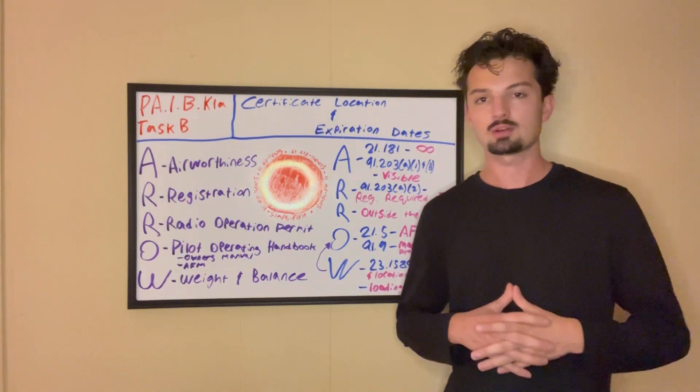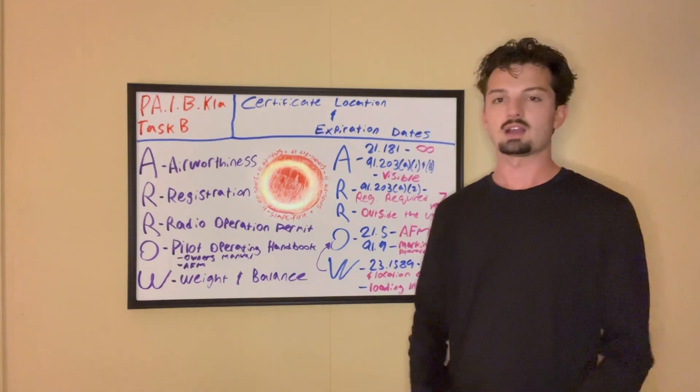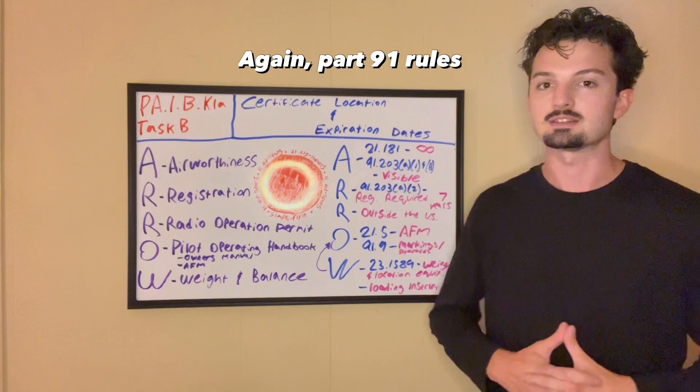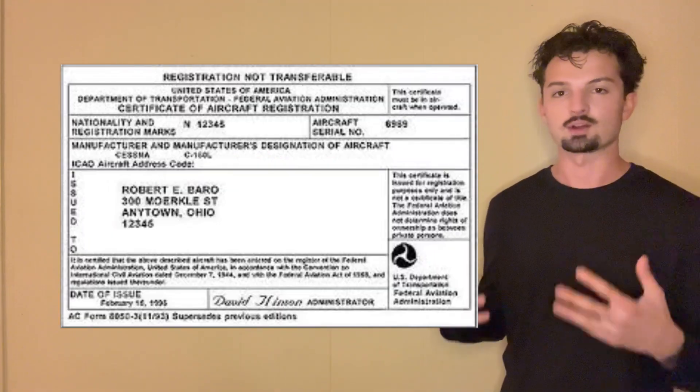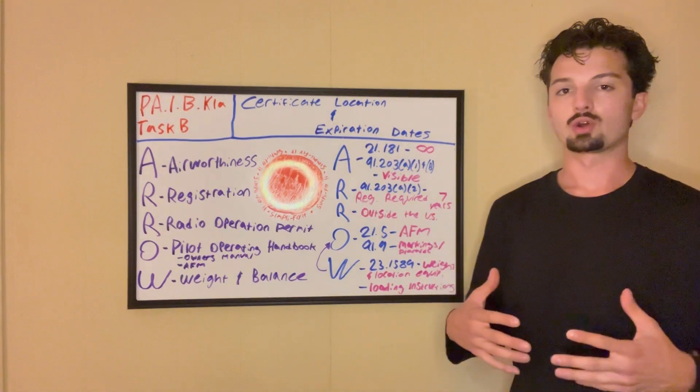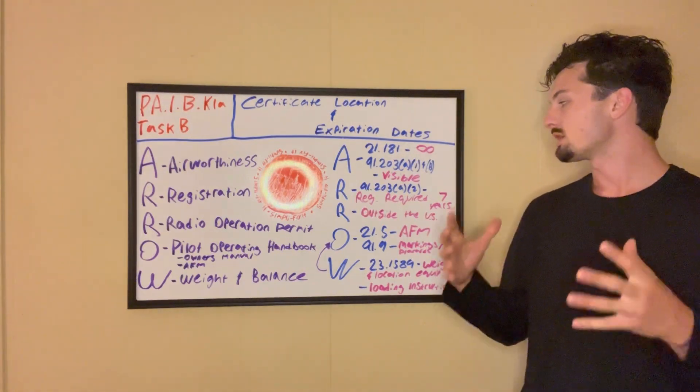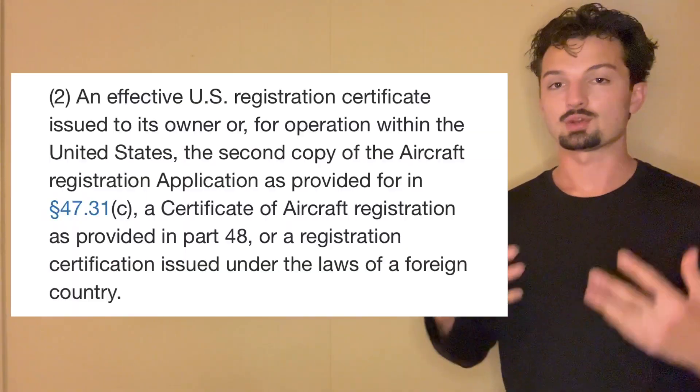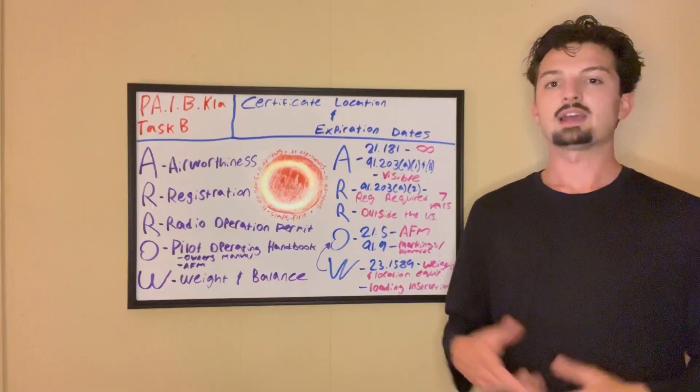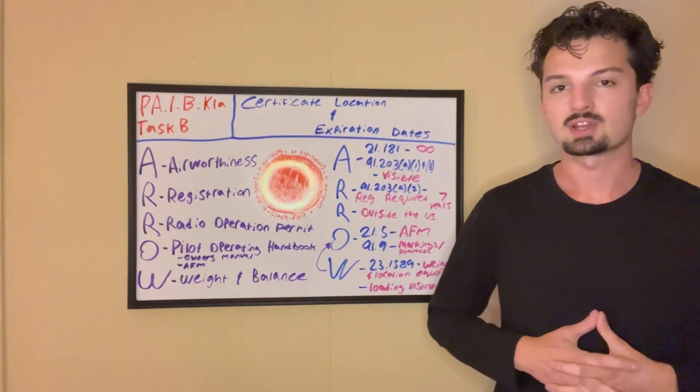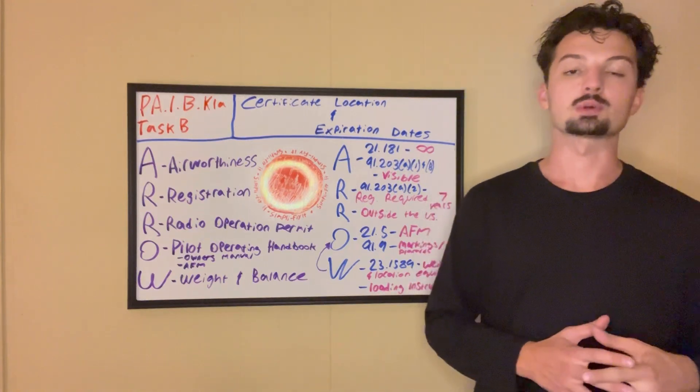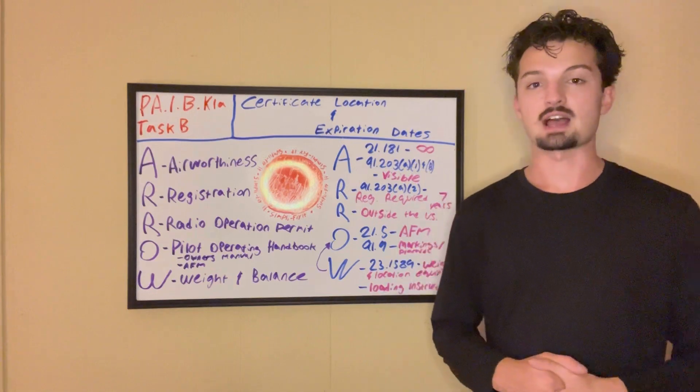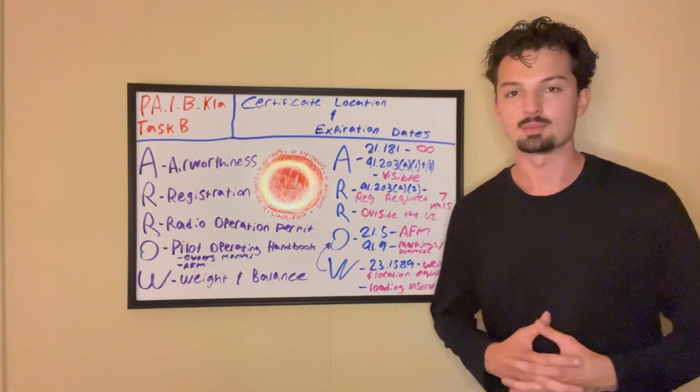All right, next in the acronym is R, which is going to be registration. Every plane that needs an airworthiness certificate also needs a registration certificate. This is the same concept as your car needing a registration certificate. And the regulation for registration is the same, 91-203, but Alpha-2. This just says that essentially you have to have that registration in the plane as well. And the rules for registration have changed multiple times. It used to be three years before that. I'm not sure what it was, but at the time of the making of this video, registration certificates last seven years.